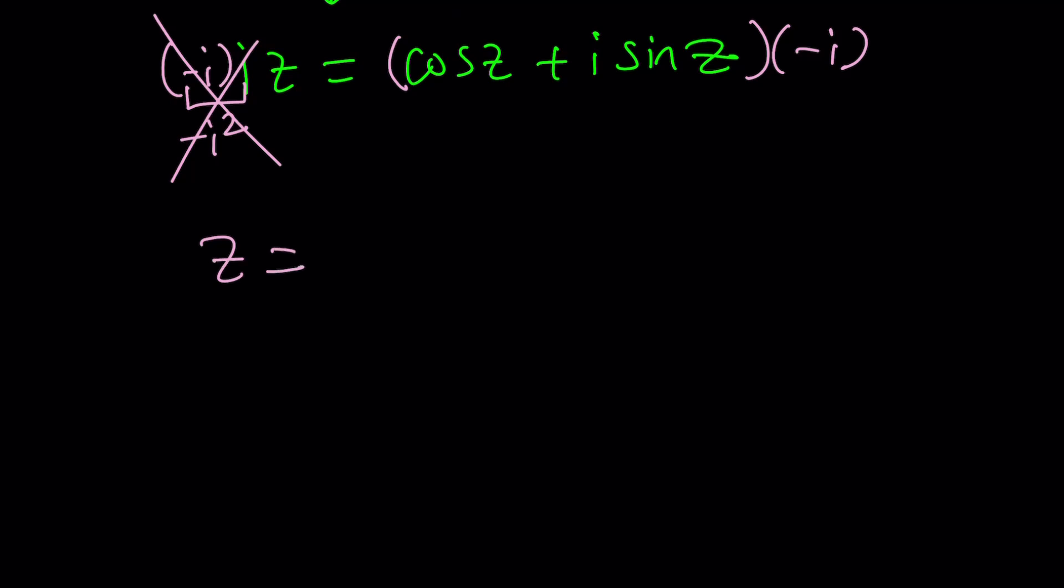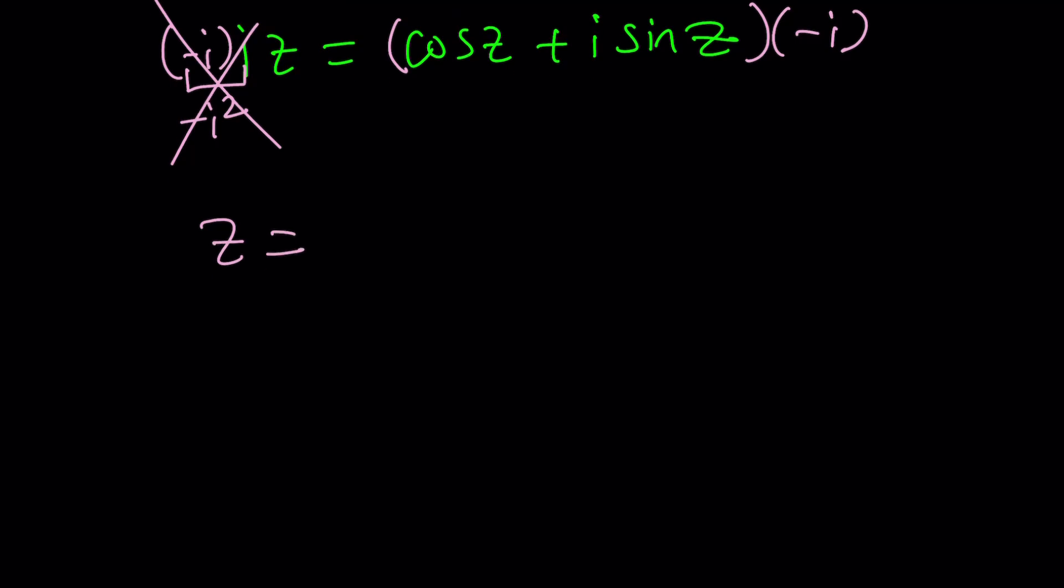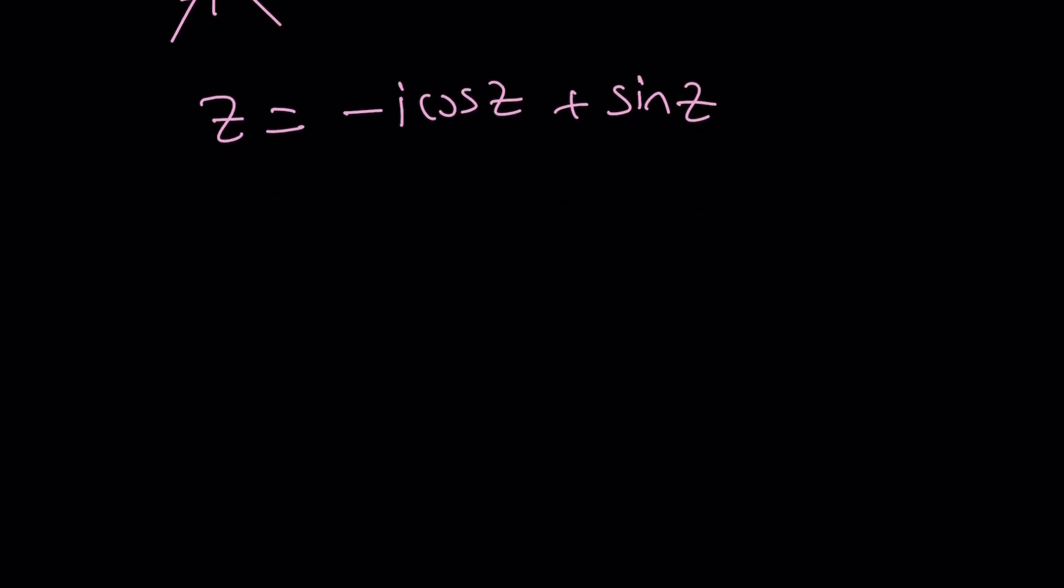So we have iz equals cosine z plus i times sine z. And notice that to get the z by itself, we can go ahead and divide both sides by i or multiply by negative i, which I think is better. Let's go ahead and multiply both sides by negative i.